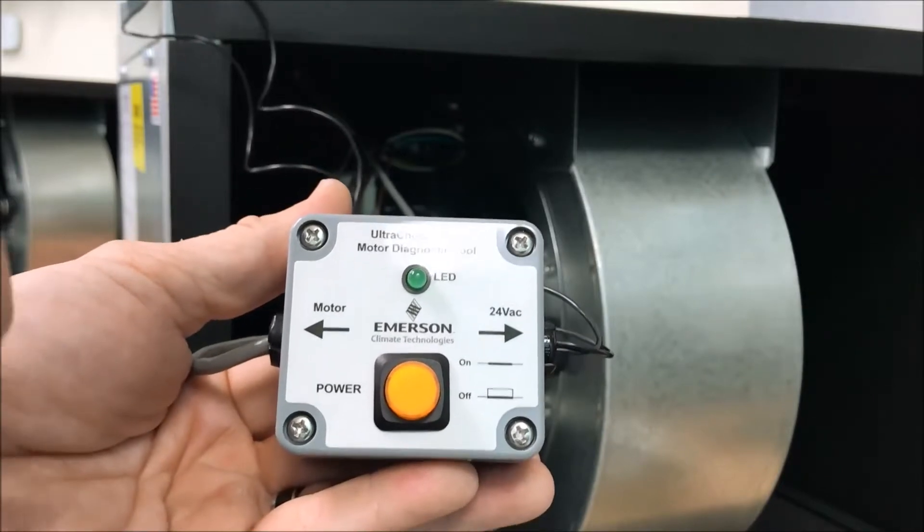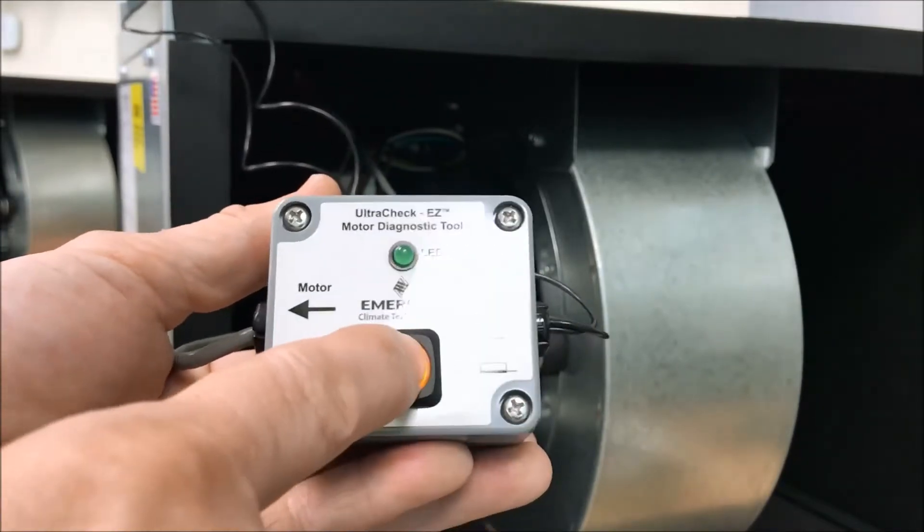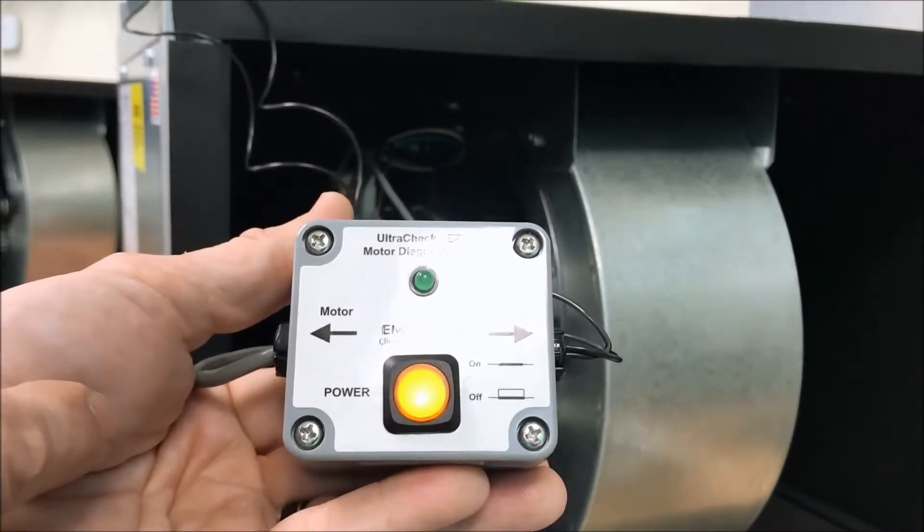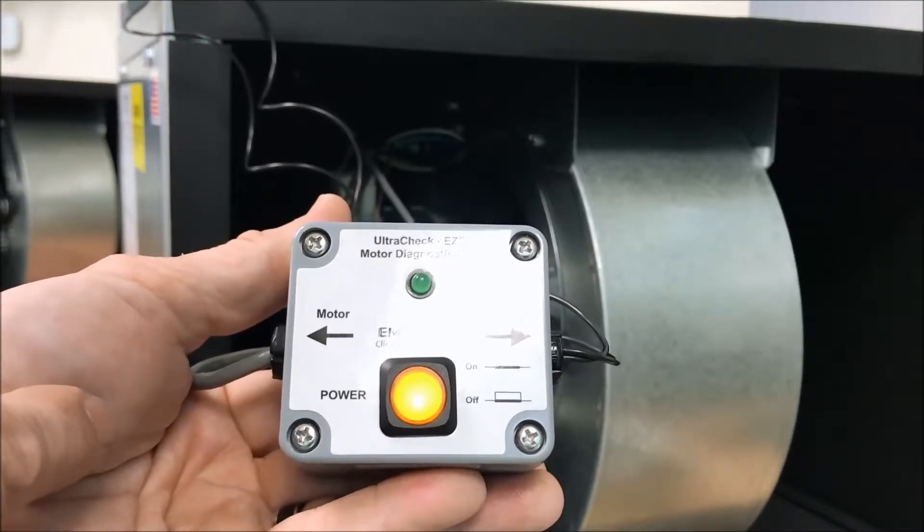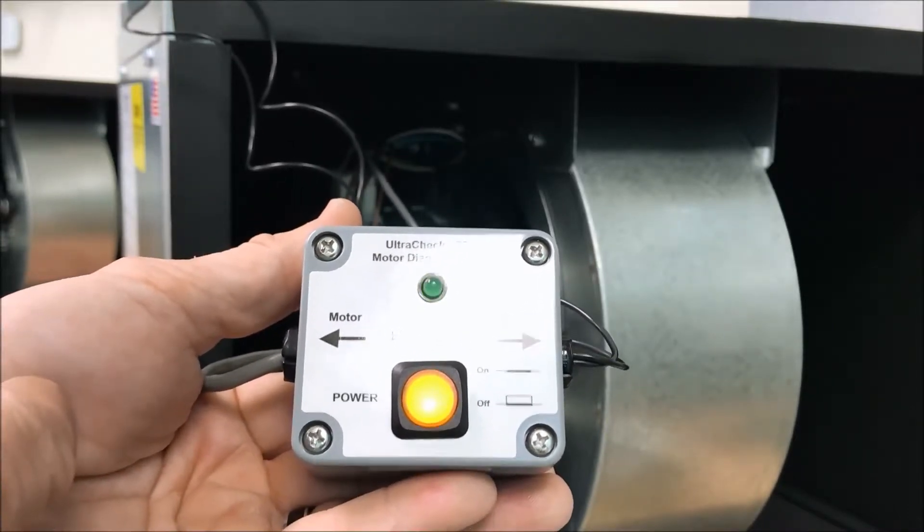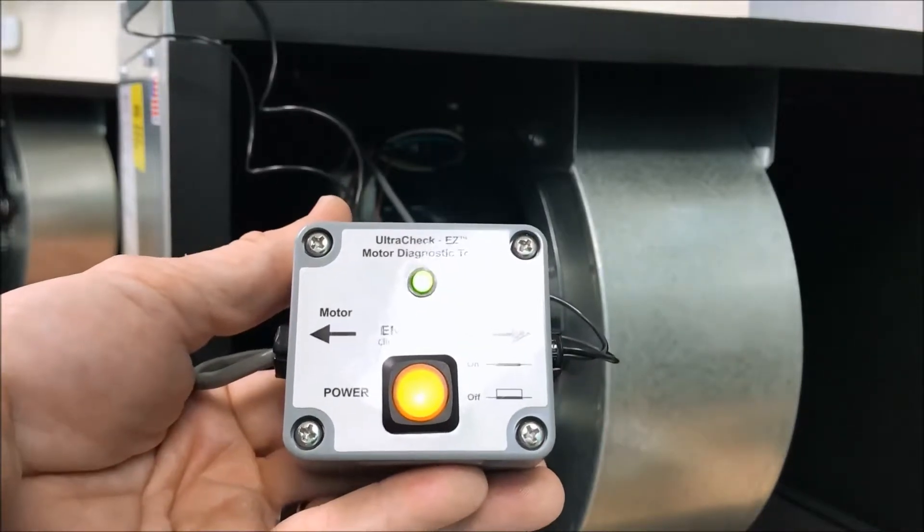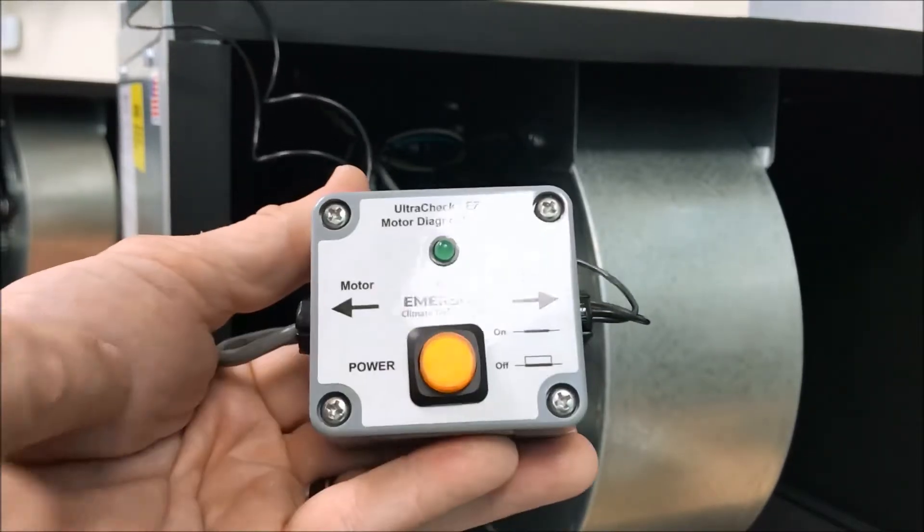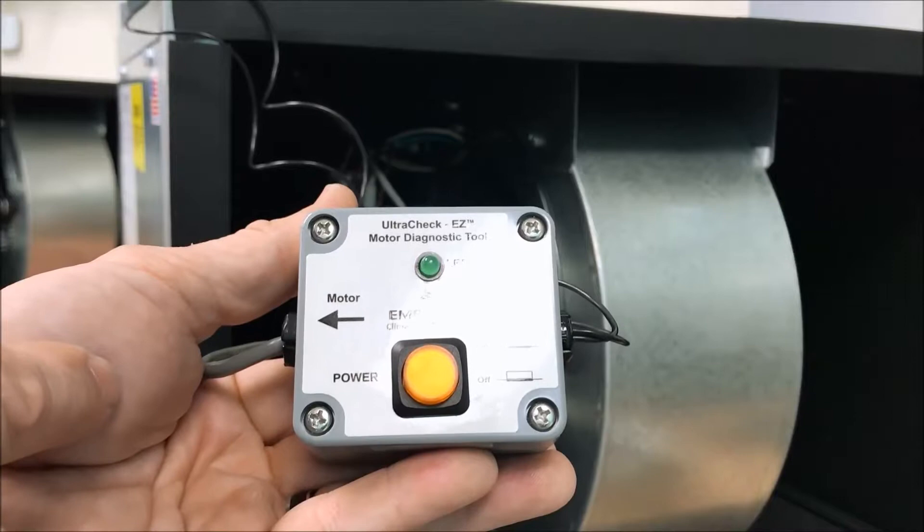You plug in the tester into the motor. You turn the tester on and within a few seconds it's going to make the motor go into the test spin. Now if the motor runs, then we know the motor is good. Replace the board.